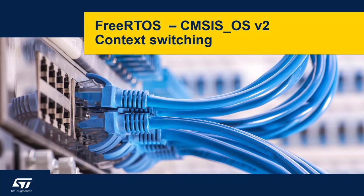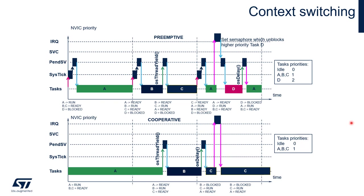Hello. Within this part, we will focus on context switching within FreeRTOS. An important part of each operating system is context switching. Let's have a look in more detail at how it works within FreeRTOS. On the screen, we can see two types of context switching: preemptive, which is the default one within FreeRTOS, and cooperative.